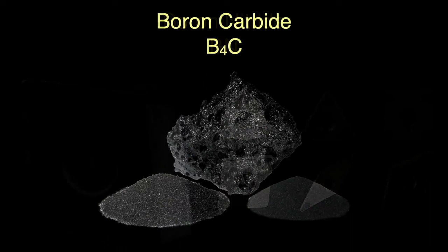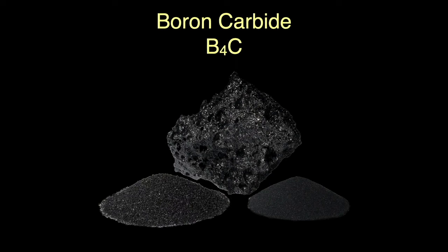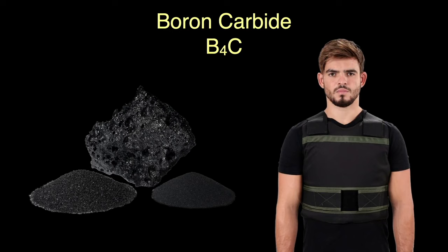Closely related boron carbide can be formed into extremely hard ceramic, 9.5 to 9.75 on Mohs scale. It's the third hardest substance known after boron nitride and diamond. The ceramic finds use in bulletproof vests and armor for military vehicles, also in the nuclear industry, which I'll discuss next.